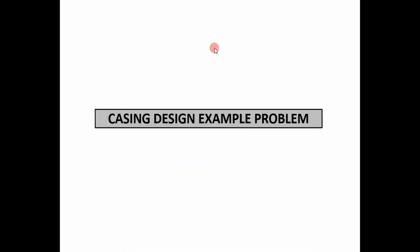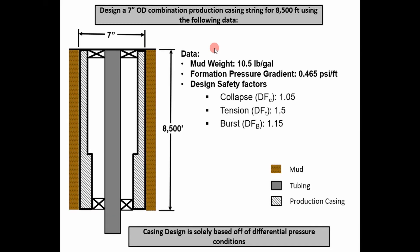Now that you have a good understanding of some of the casing design criteria, we're going to go into the actual problem. We're going to step through and design a 7-inch combination casing string consisting of two different types of casing, put into a well drilled to 8,500 feet TVD. We'll use a mud weight of 10.5 pounds per gallon, a formation pressure gradient of 0.465 PSI per foot, and design safety factors for collapse, tension, and burst.